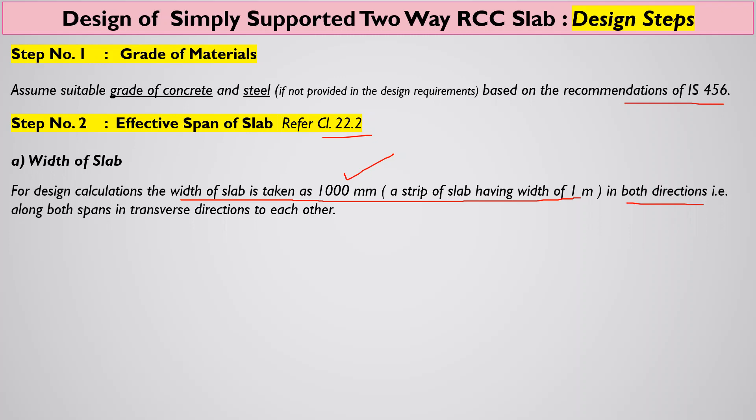Here is how it is different from a one-way slab: we have to take both directions into consideration — both the span, whether it is a longer span or shorter span. Ultimately, we have to design a one-meter strip of the slab parallel to the shorter span, as well as another strip of the same one-meter width parallel to the longer span. Both strips will be transverse to each other.